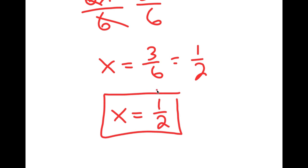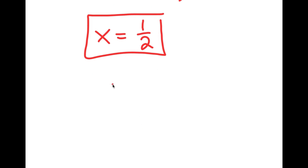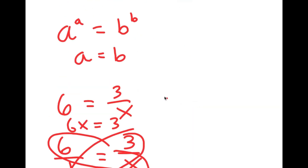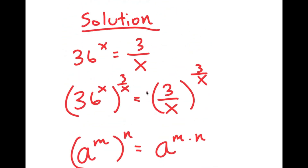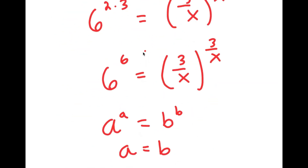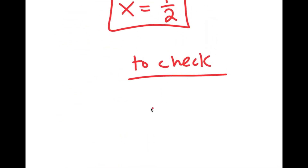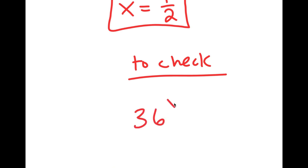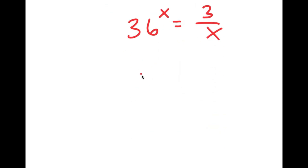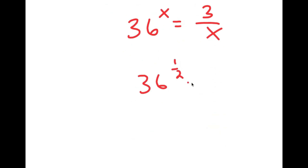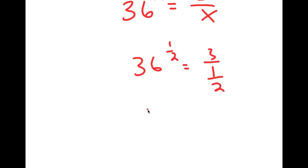Now to check: my equation was 36 to the power of x is equal to 3 over x, and x equals 1 half. So I get 36 to the power of 1 half is equal to 3 over 1 half, which equals 6, is equal to 6. This confirms that x equals 1 half is correct.